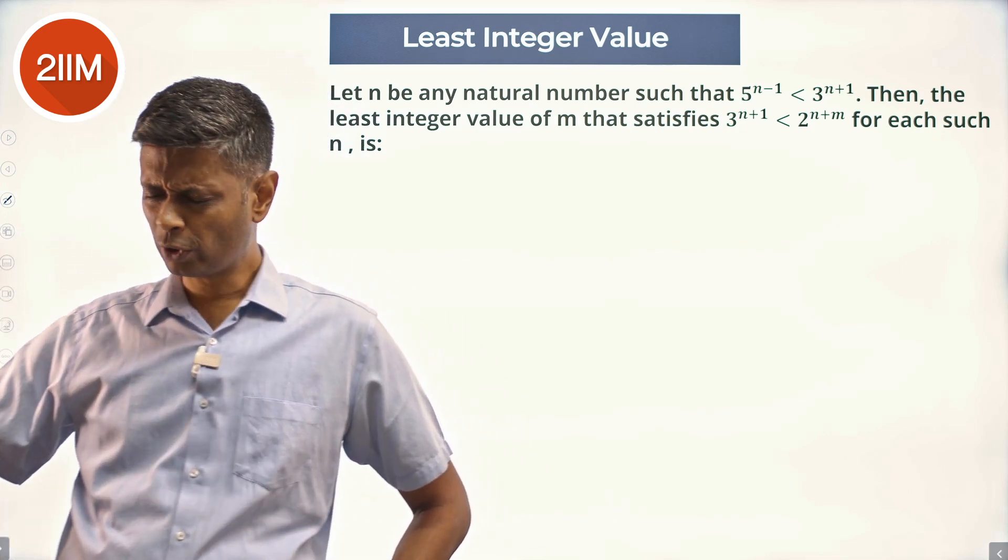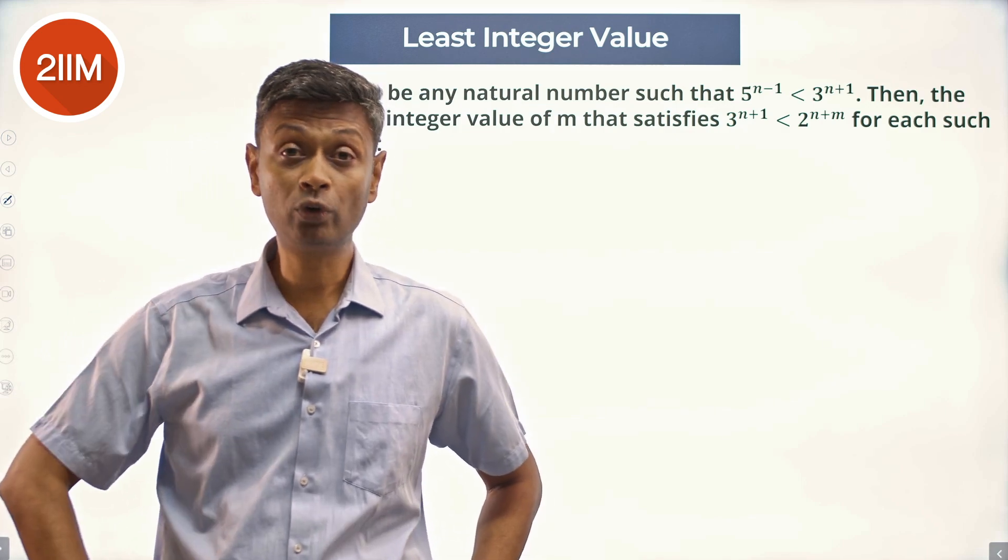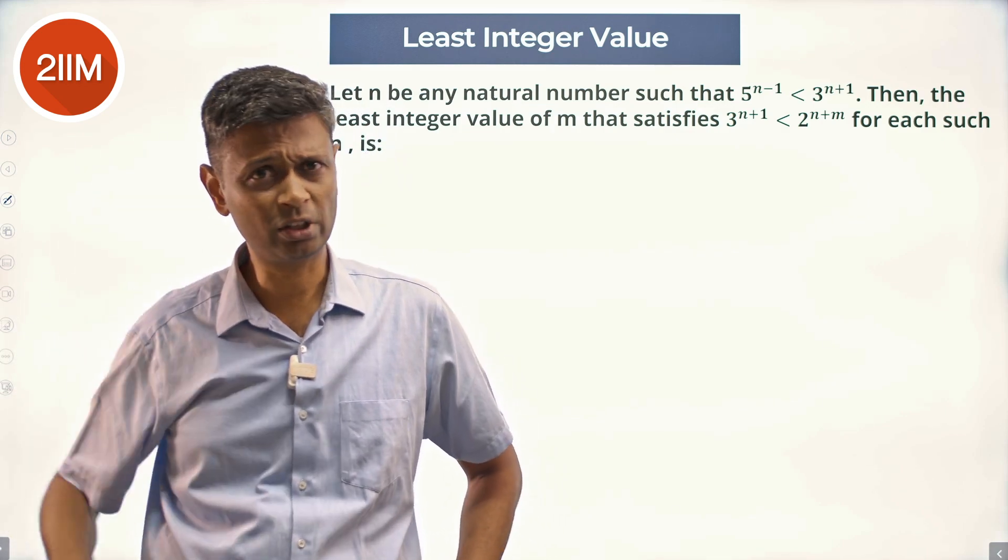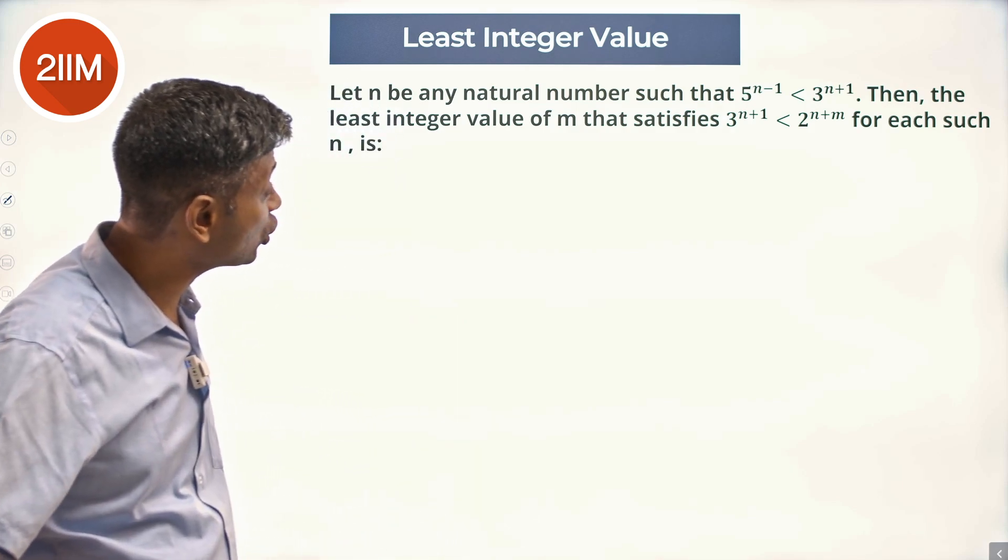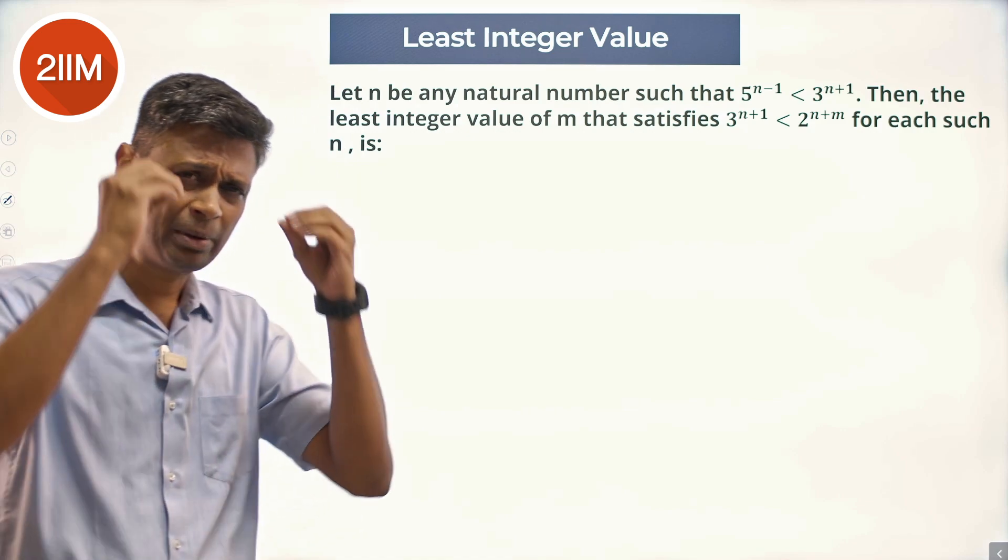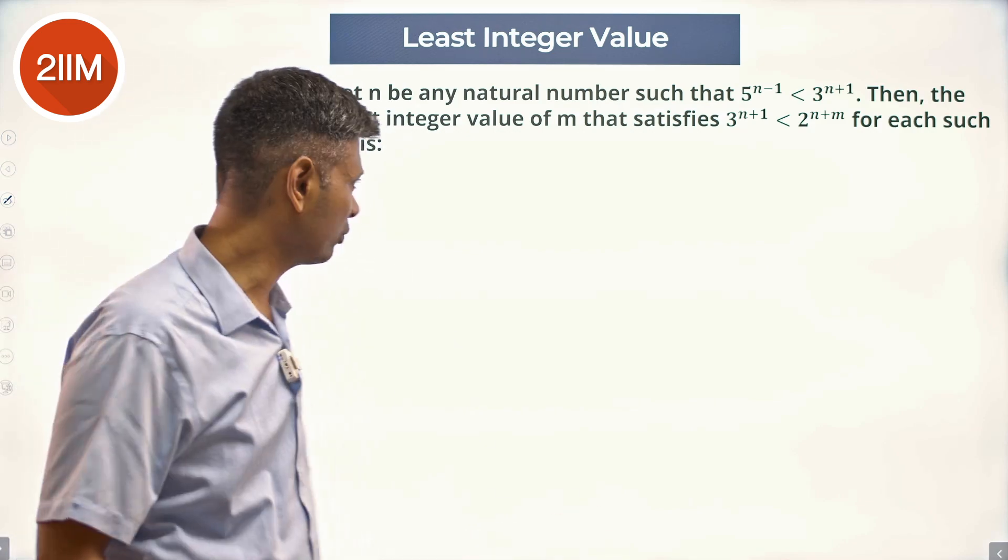This is one of those beautiful questions. I got caught out by this. Beautiful because it looks severely algebraic—there's an n and an m and powers and all that. But 5^(n-1) < 3^(n+1), that is not algebraic at all. It's just numbers, nothing more than that.